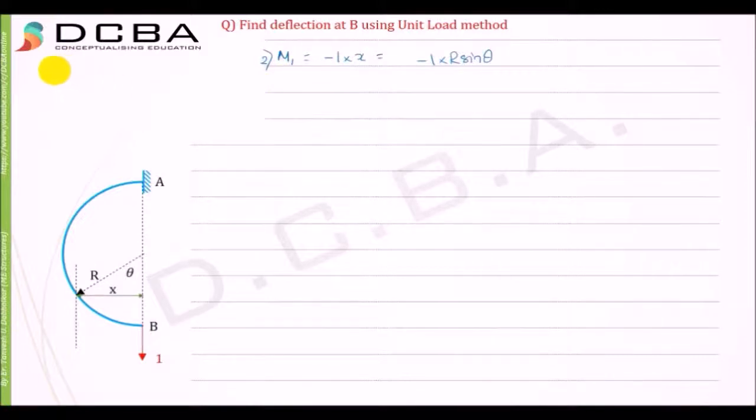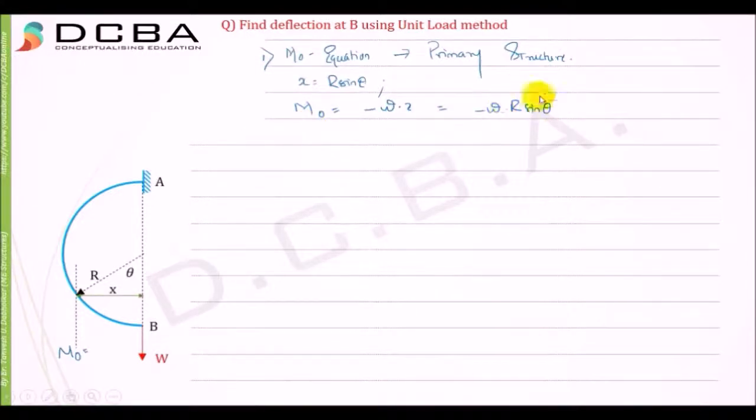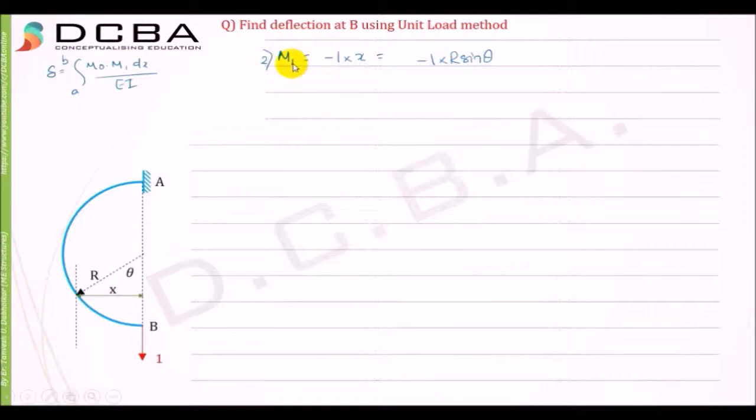Now there is one more term in our formula: integration of a to b, M0 M1 dx upon EI. If you see, we have converted M0 in terms of theta, r and theta. We have converted M1 in terms of r and theta, but still this dx is not yet converted.